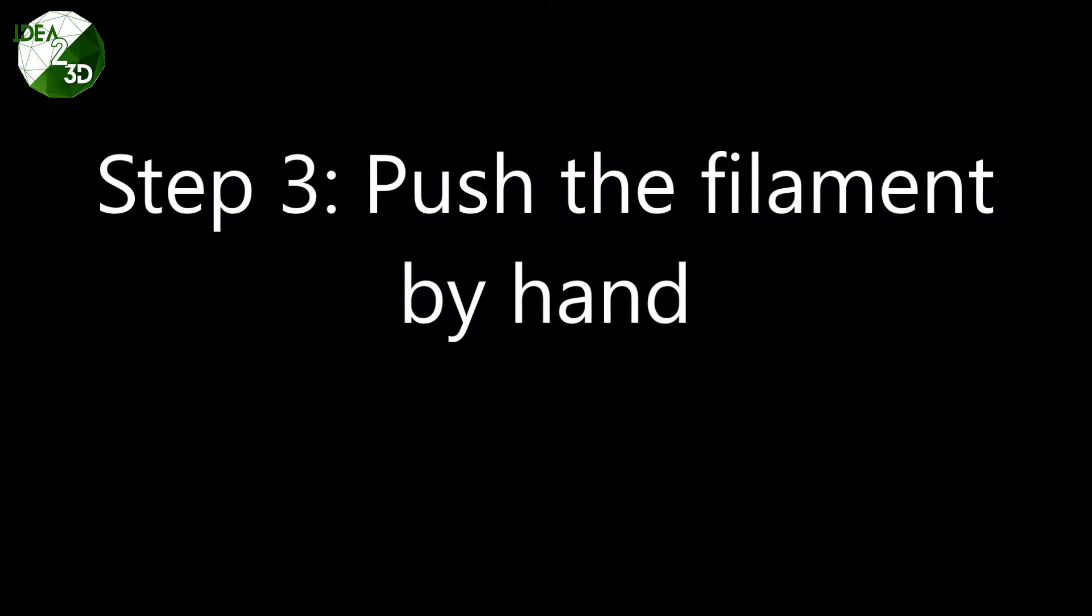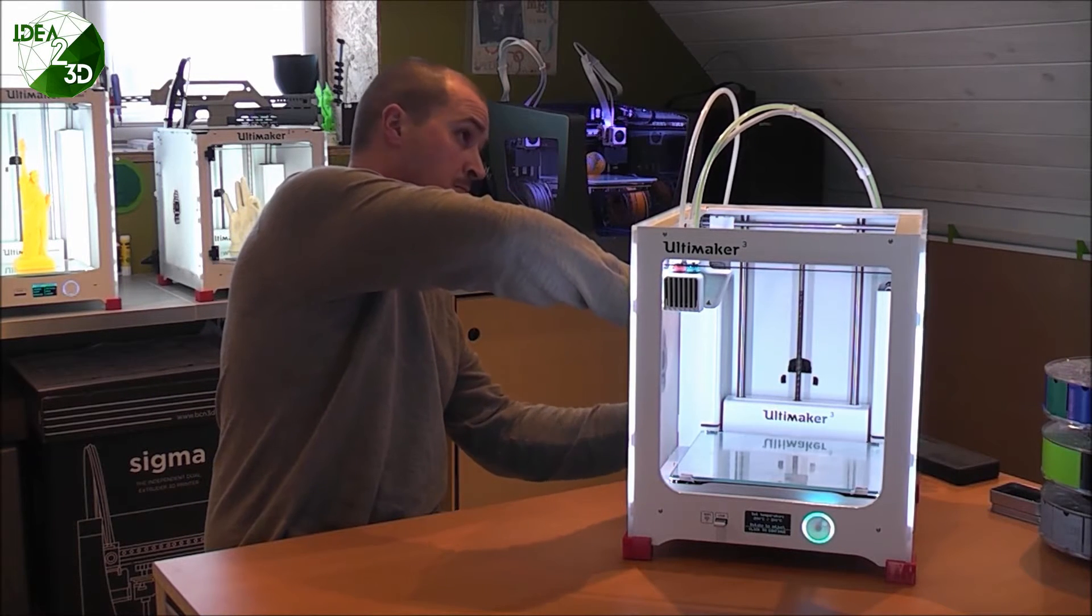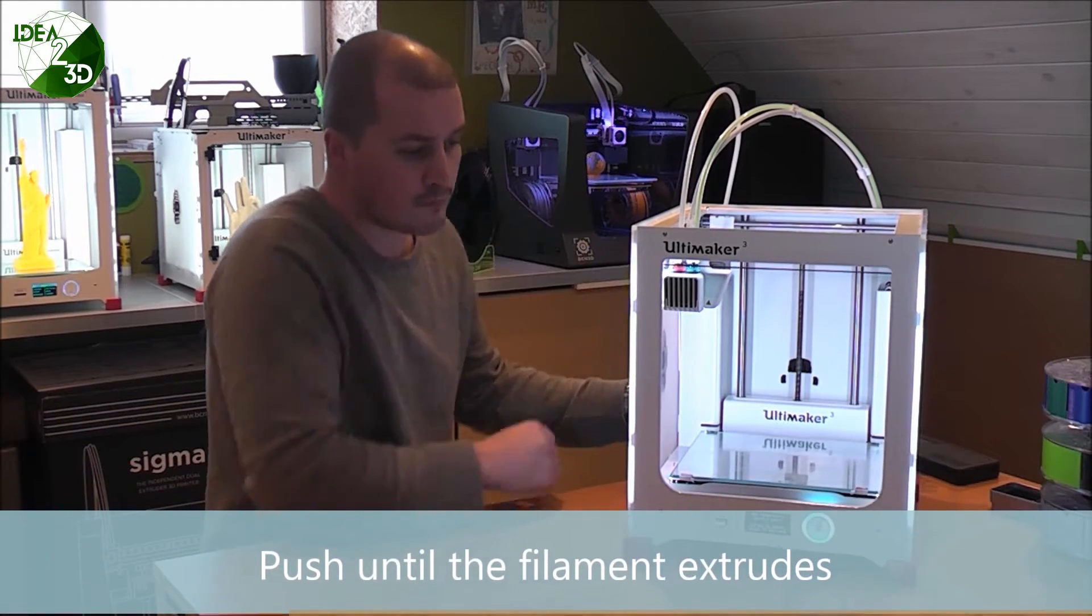Step 3: push the filament by hand. To do this you have to hold the feeder lever up in order to extrude some filament. Just push until some filament comes out of the nozzle.